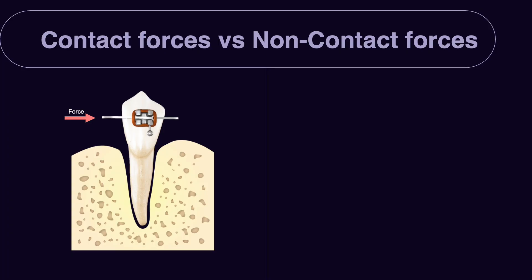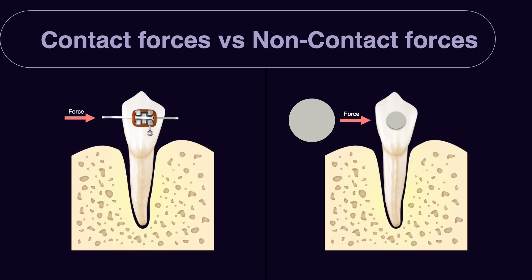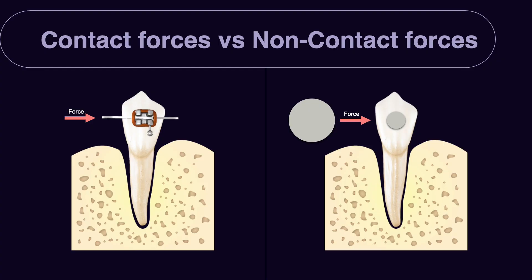The second decision is: are we going to have contact forces or non-contact forces? Contact forces are those where the source of the force and the biological target — for example, the tooth — are in contact with each other. When you use aligners or braces and wire, they contact the surface of the tooth; the material is the source of the force, the tooth is the biological target, and the force transfers directly to the biological target so you can predict what you want to achieve.